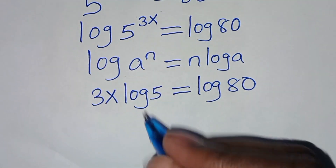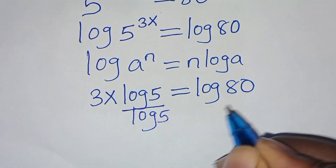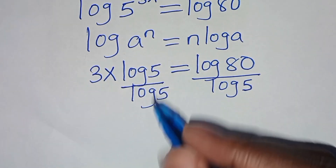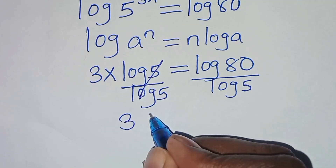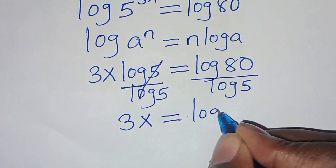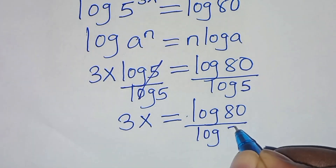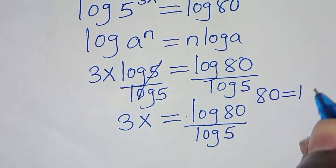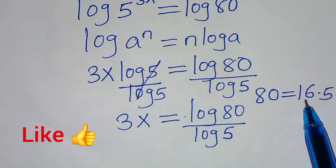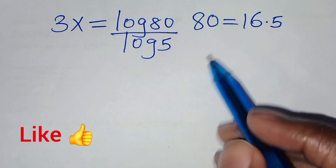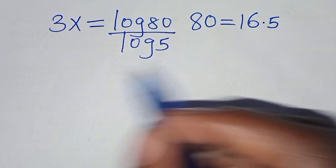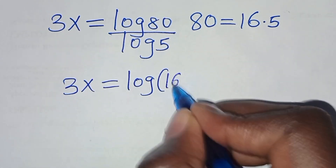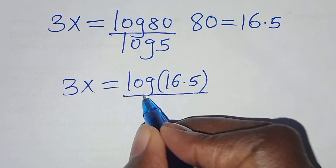The next step is to divide both sides by log 5. So log 5 and log 5 simplify, so that 3x is equal to log 80 divided by log 5. The next step is that we can express 80 as 16 times 5. So this means that we have 3x equal to log of 16 times 5, divided by log 5.